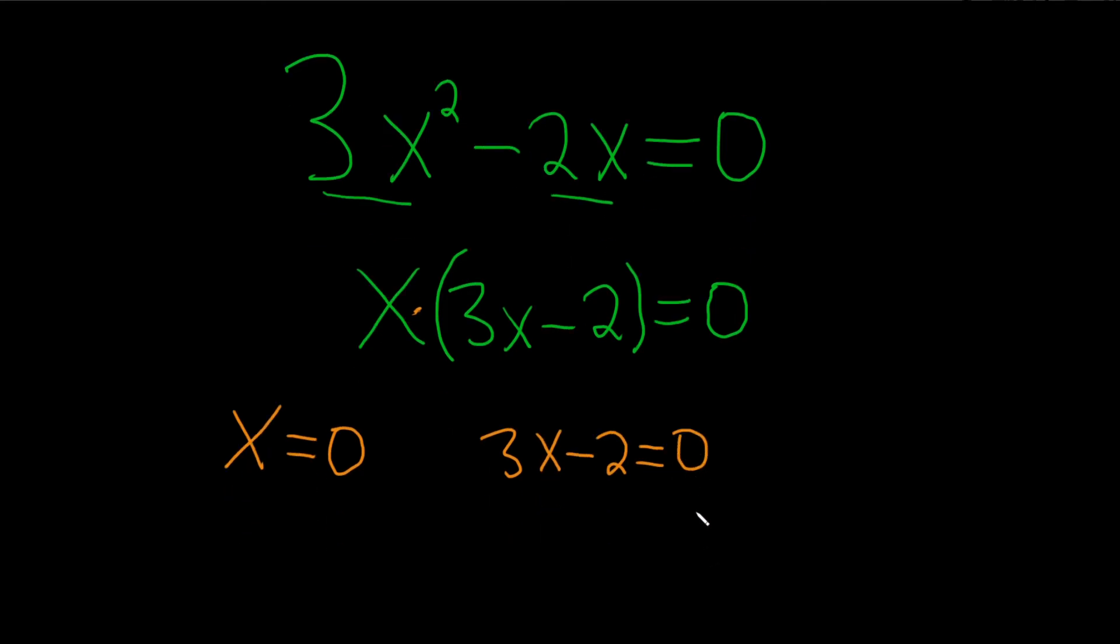That gives us x equals 0. And then we can add 2 here, so plus 2 plus 2. So we get 3x equal to 2.